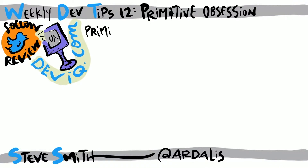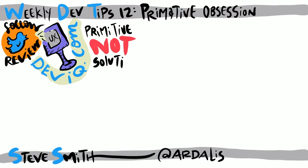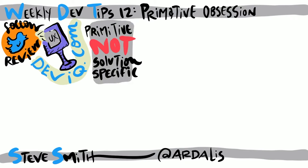This week's topic is primitive obsession. Primitive obsession describes code in which the design relies too heavily on primitive types, rather than solution-specific abstractions. It often results in more verbose code with more duplication of logic, since logic cannot be embedded within the primitive types that are used.